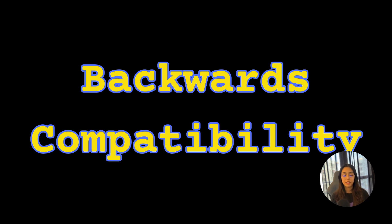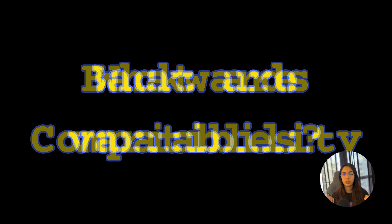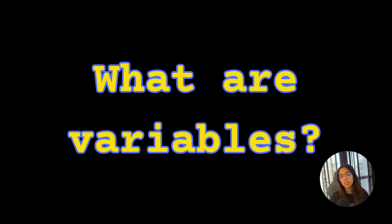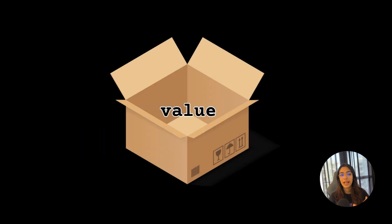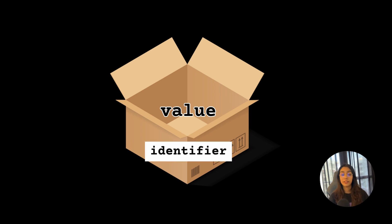So now we've covered the primitive data types, object data types, and the typeof operator. Now let's go back and revise what variables are. When I was first learning programming with C++, this is how we understood variables. Think of a variable as a box that holds some sort of value. Each box has an identifier or a label that is used to access the value within that box.